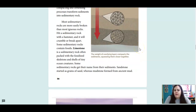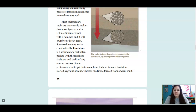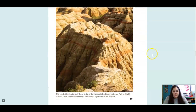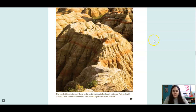Most sedimentary rocks are more easily broken than igneous rocks. Hit a sedimentary rock with a hammer and it will crumble or break apart. Some sedimentary rocks contain fossils. Limestone is a sedimentary rock often packed with the fossilized skeletons and shells of tiny ocean creatures. Some sedimentary rocks get their name from sediments — sandstone started as grains of sand, whereas mudstone formed from ancient mud. This shows sedimentary rocks in Badlands National Park in South Dakota, where the older layers are at the bottom and newer layers on top.